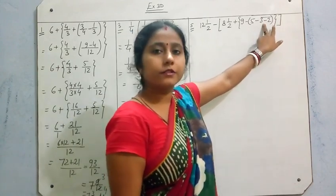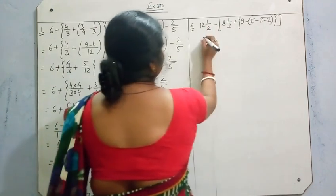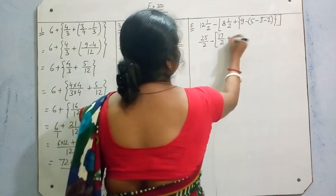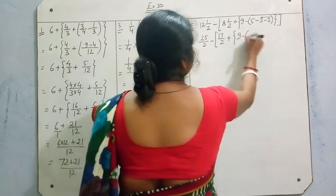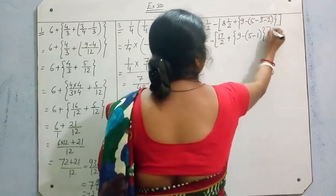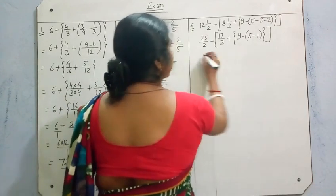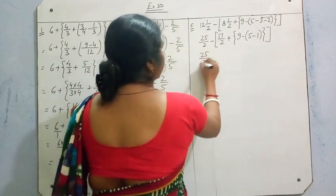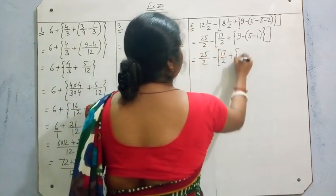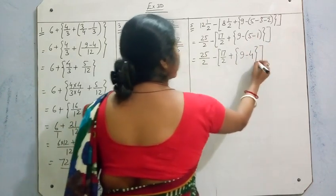First of all we solve the vinculum, which we also call the bar. Change the mixed numbers to improper fractions: 25/2 and 17/2. So we have 25/2 minus [17/2 plus {9 minus (5 minus (3 minus 2))}]. Here 3 minus 2 is 1 — vinculum is removed. Now solve the small bracket: 9 minus 5 minus 1 is 4 — small bracket removed.